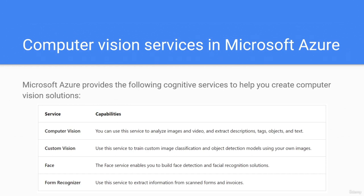Computer vision services in Microsoft Azure. Microsoft Azure provides the following cognitive services for computer vision solutions. The computer vision service can analyze images and videos to extract descriptions, tags, objects, and text. Custom vision is used to train custom image classification and object detection models using your own images. The face service enables you to build face detection and facial recognition solutions. Form recognizer is used to extract information from scanned forms and invoices.